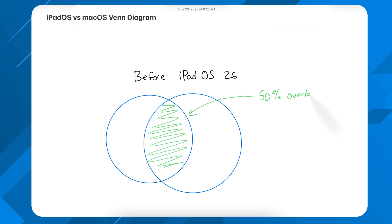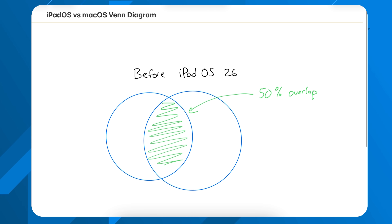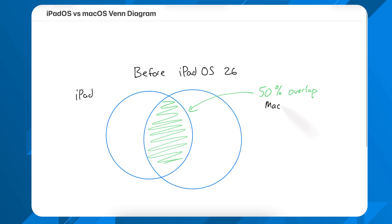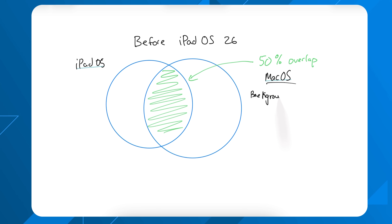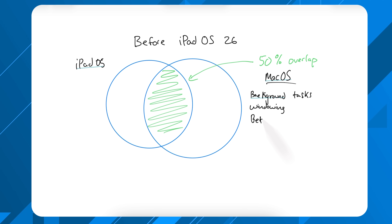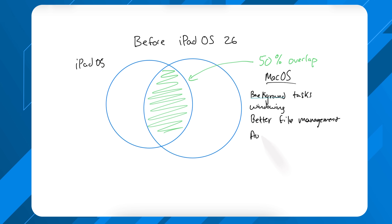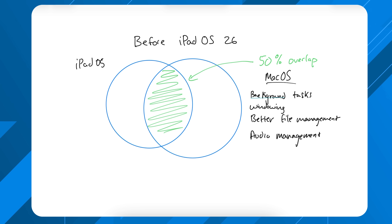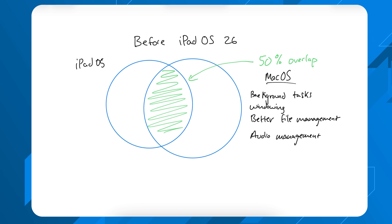There was some overlap — applications that worked on both iPadOS and macOS, counterpart apps, and the full App Store on iPadOS meant some applications actually worked better on iPad. There was a little crossover and they worked extremely well together, which is why there was that roughly 50% overlap. But now with iPadOS 26, things are completely changing. That line is very blurry and the differences in use cases between iPad and macOS have shrunk significantly.